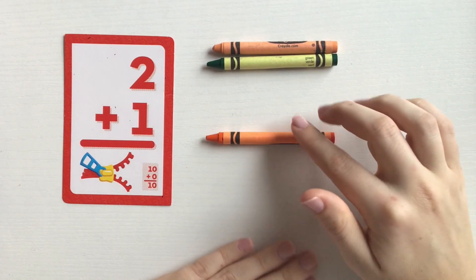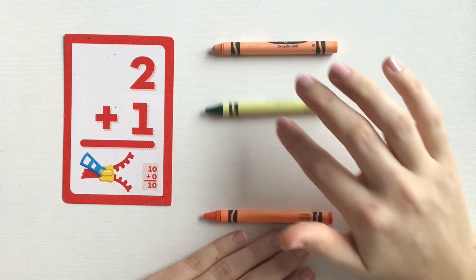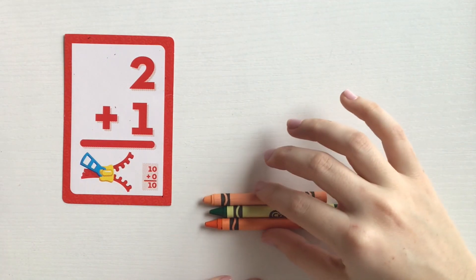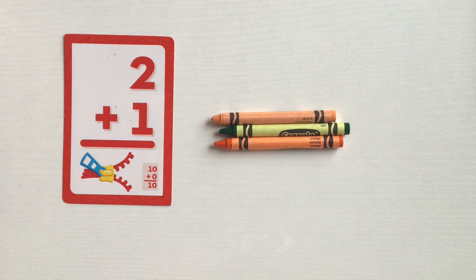Let's add them all together. One, two, three. Ben and Jane have three crayons all together. Two plus one equals three.